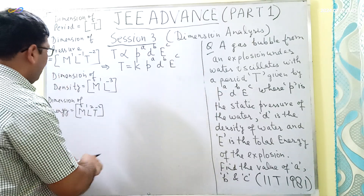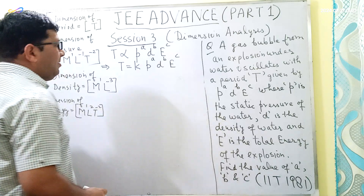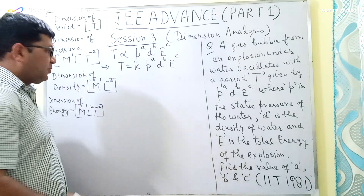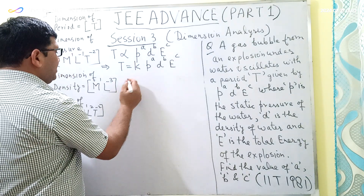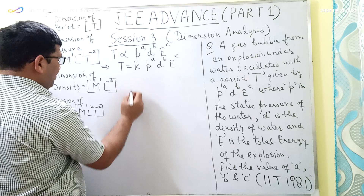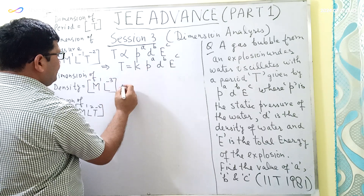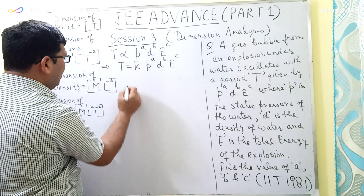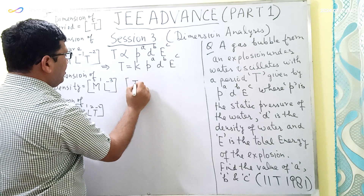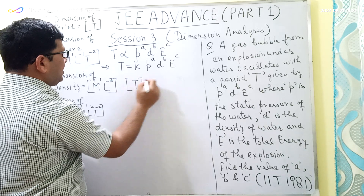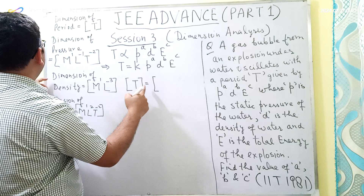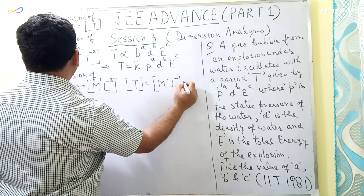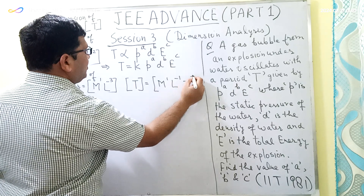Now, as per the principle of homogeneity, the dimensions of all terms on the left-hand side and right-hand side of the equation should be equal. So I will write this equation in terms of dimensions. The dimension of period is T¹. The dimension of pressure is M¹L⁻¹T⁻², raised to the power A.